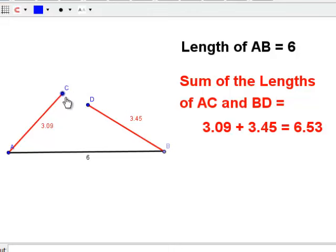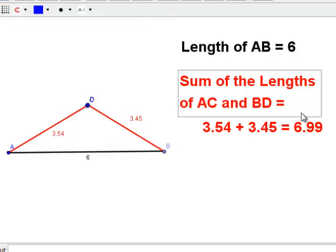If I create a triangle like this, as you can see their sum is 6.99, which happens to be bigger than the third side.